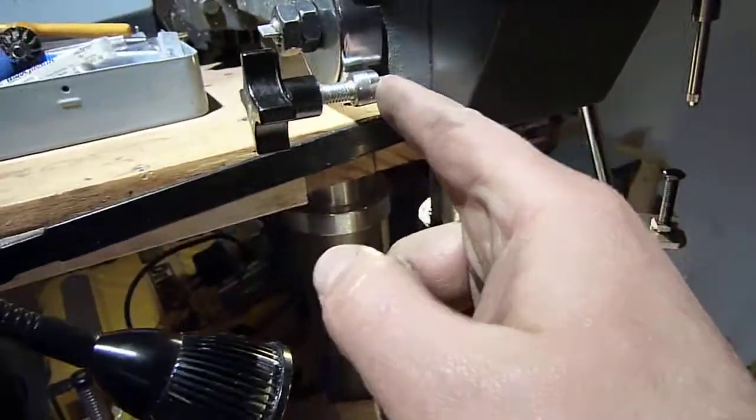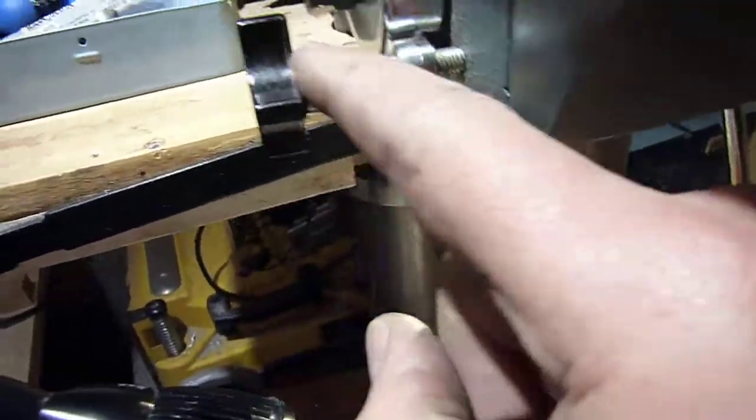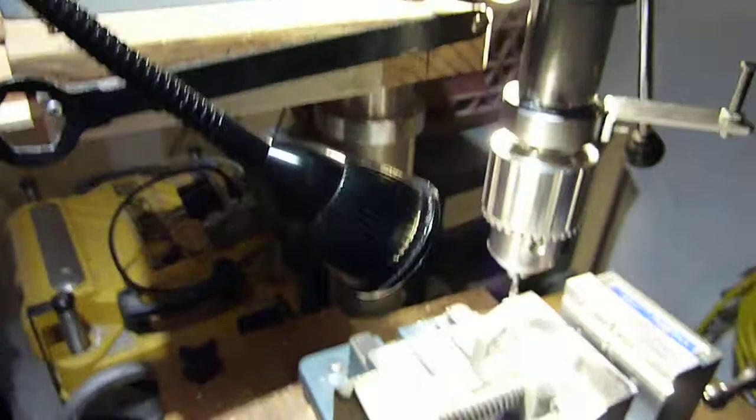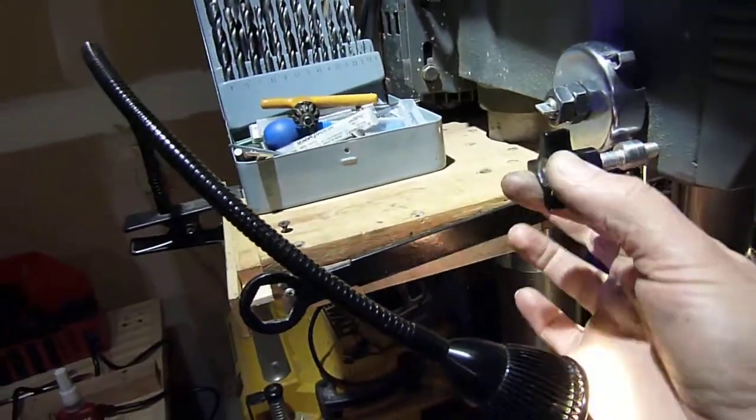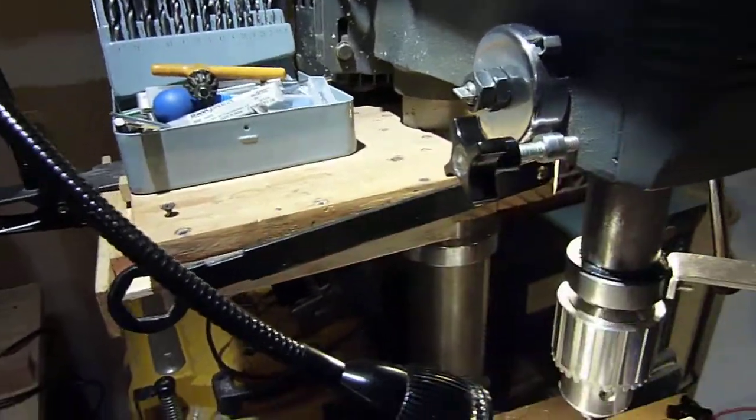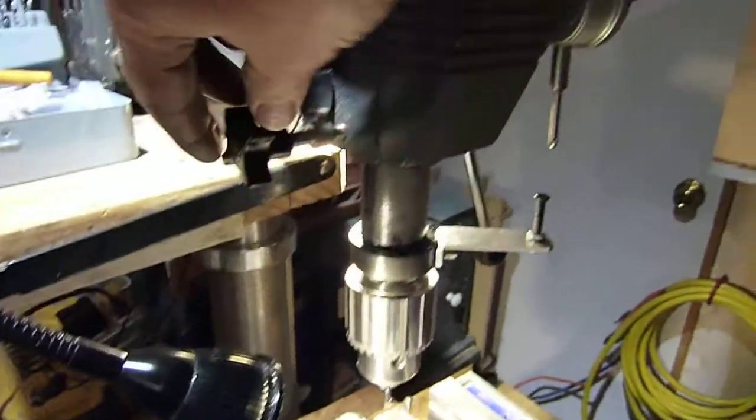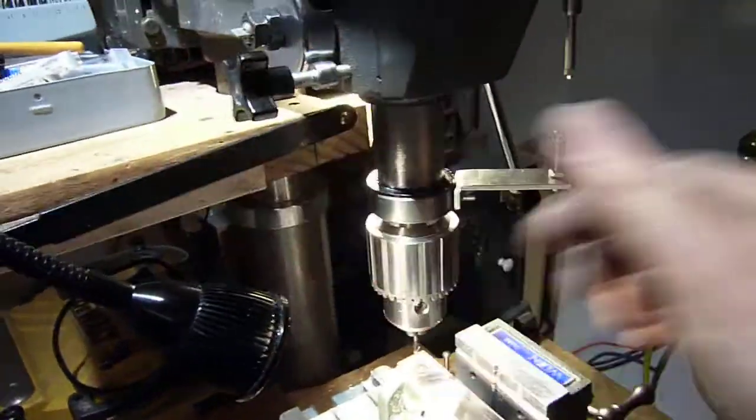So that's what I did. This is M8 threads, a piece of all-thread that I super glued a bakelite knob onto. So right now it's locked and go back, whatever, a quarter turn, eighth of a turn, and now it's free. So locked, doesn't move, now it's free.